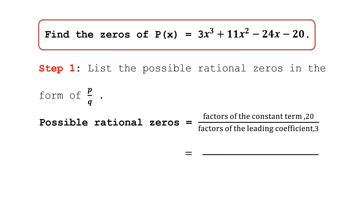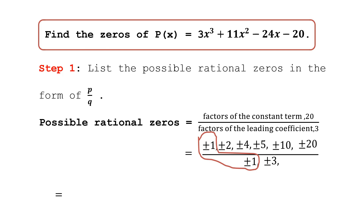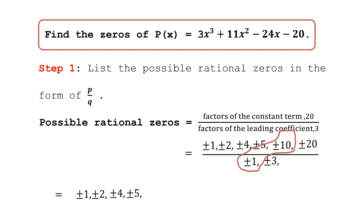The factors of 20 are: positive and negative 1, positive and negative 2, positive and negative 4, positive and negative 5, positive and negative 10, and positive and negative 20. The factors of 3 are: positive and negative 1, and positive and negative 3. To get the simplified possible rational zeros, we divide the numerators by the denominators. Dividing all factors of 20 by 1 gives us: ±1, ±2, ±4, ±5, ±10, ±20.